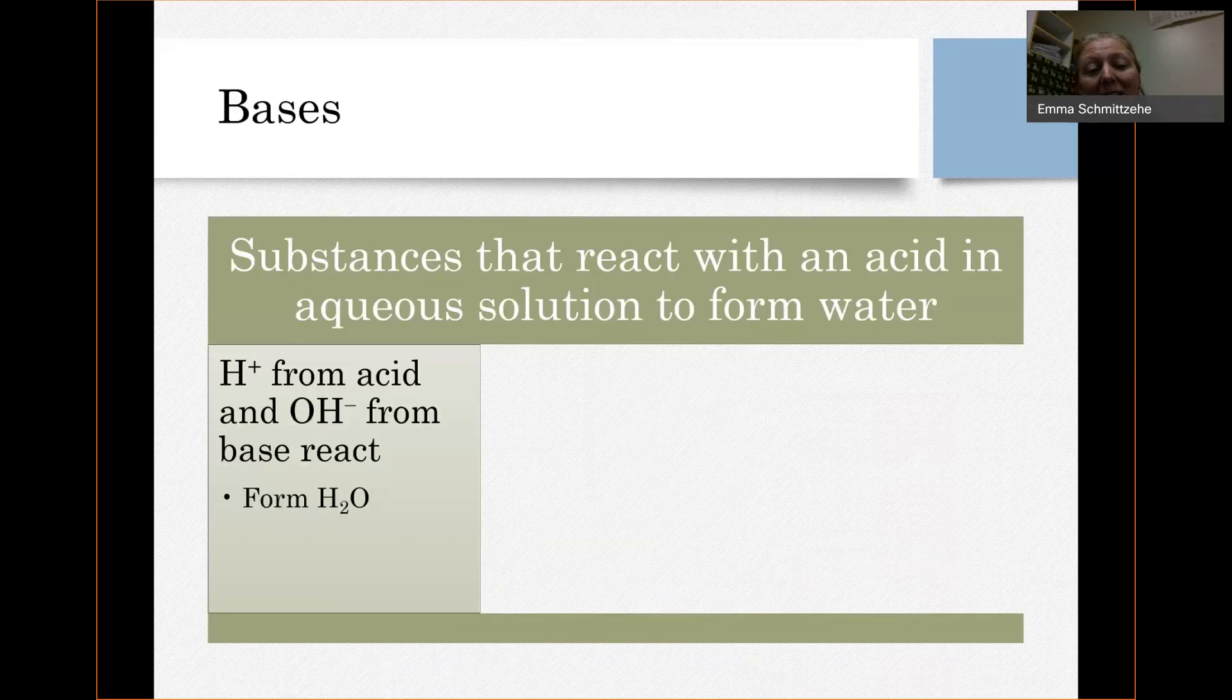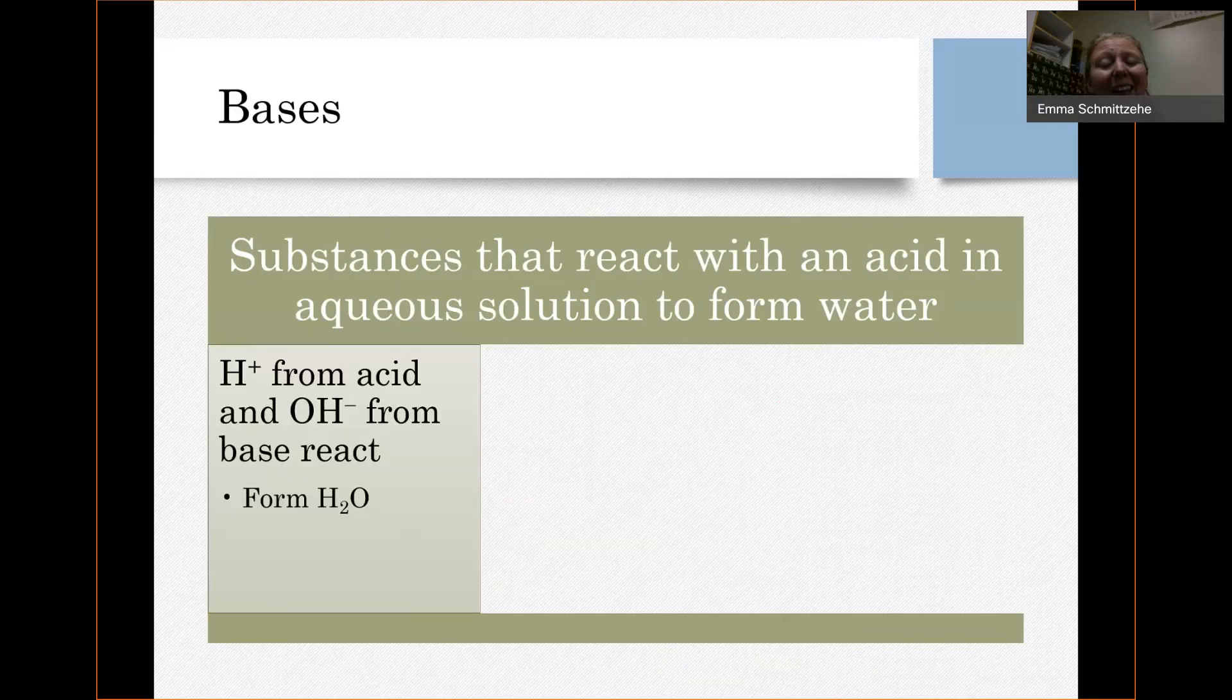So what happens, the reason that it's reacting with the acid and forming water is because the H+ that comes from the acid actually ends up reacting with the OH- that comes from the base. That's where the water comes from. If you combine a hydrogen ion, H+, with a hydroxide ion, OH-, you get a water molecule. So that means the base in some way is providing OH-. The OH- part is coming from the base, and that could be directly, that could be indirect.